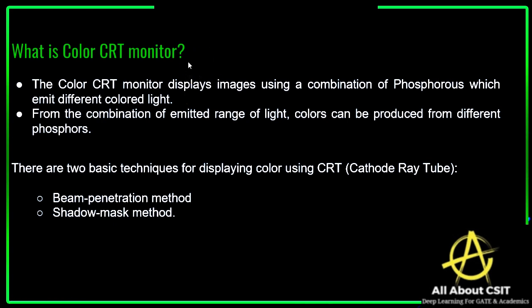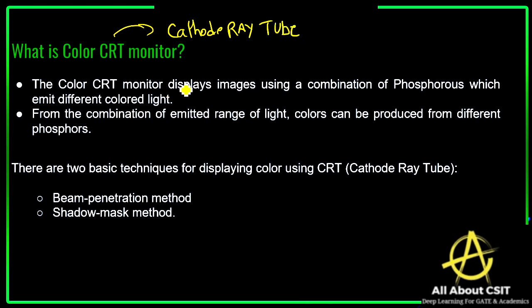CRT stands for cathode ray tube. The color CRT monitor displays images using a combination of phosphorus which emits different colored light. The combination of phosphorus present in the CRT emits different color light, and from the range of emitted light, different colors can be produced from different phosphorus materials.